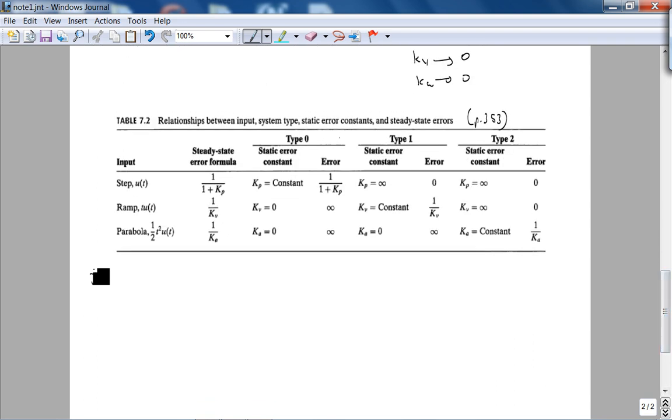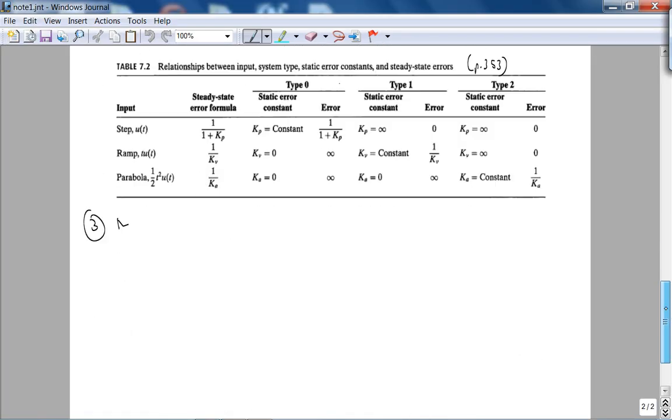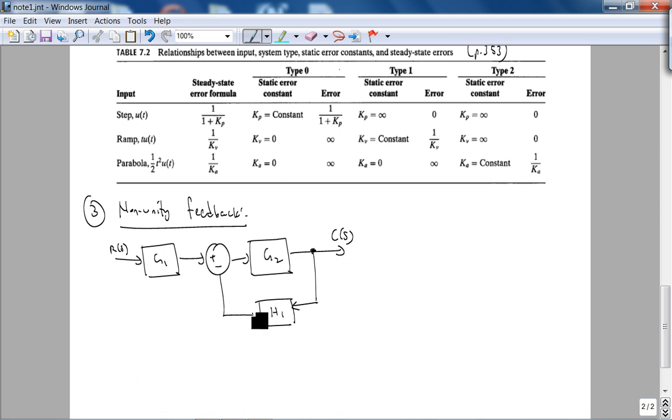And finally, what if we have non-unity feedback? So non-unity feedback. We, of course, first just check stability, but consider this very general R(s). Let's call this G1 input transducer. You go into the feedback system. You have G2 here. Not only that, let's call this C(s) and then I pick off from here, and this is H1. You have a non-unity feedback.